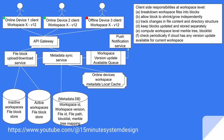Let's quickly summarize what we have discussed so far. The client-side code does the following: break down entire workspace files into blocks; allow blocks to shrink and grow independently; track changes in the file content and directory structure; keep all file blocks updated and stored separately from the workspace; compute the workspace-level Merkle tree and maintain the block list; and check periodically if the cloud has any version update available for the current workspace.